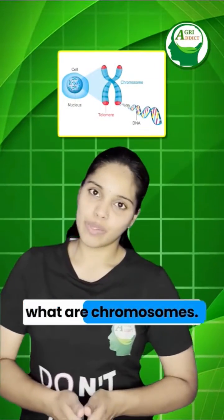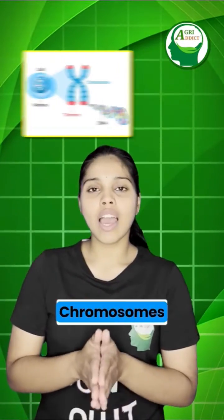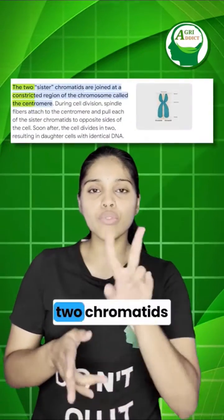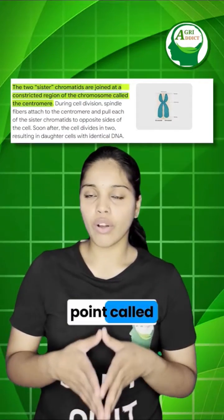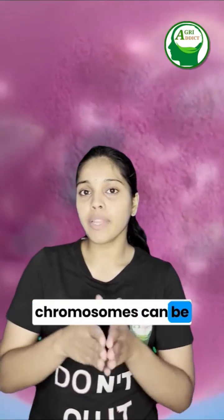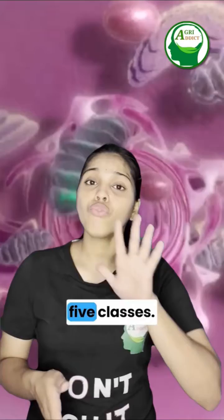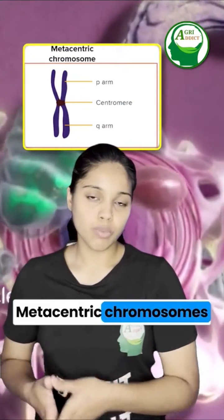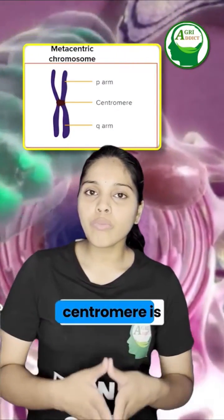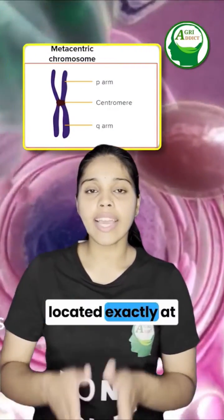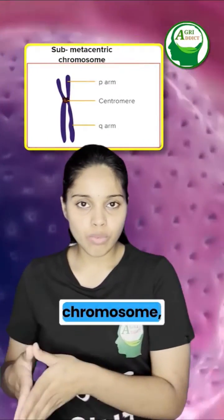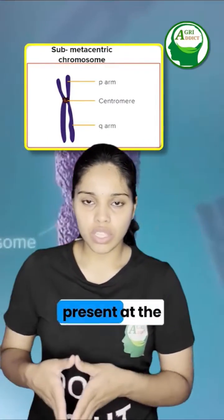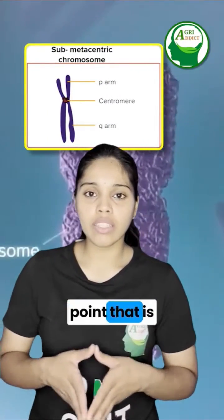Let's understand what chromosomes are. Chromosomes are made up of chromatids, which are held together at a point called a centromere. According to centromere position, chromosomes can be divided into five classes. Metacentric chromosomes have the centromere located exactly at the central point. In submetacentric chromosomes, the centromere is present at a point that is to the side of the center.